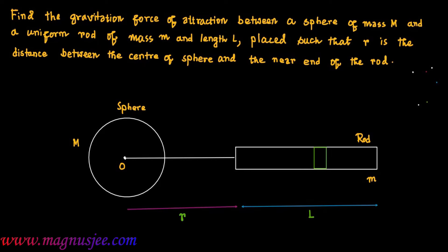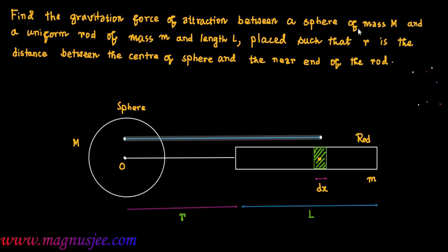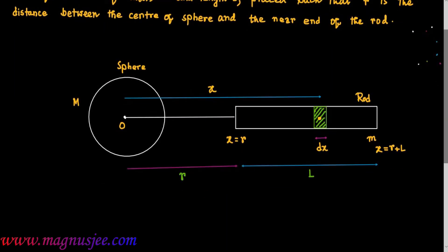Now we can denote a small portion or small element of the rod. This small element, shaded by green color, has length dx and mass dm. We can denote the distance of this small element from the center of the sphere as x. At the near end, x is equal to r, and at the further end, x is equal to r plus L.